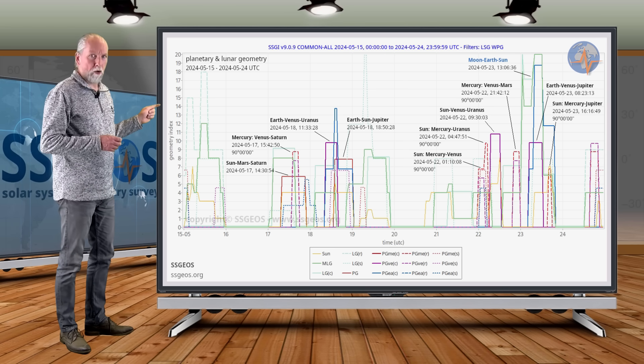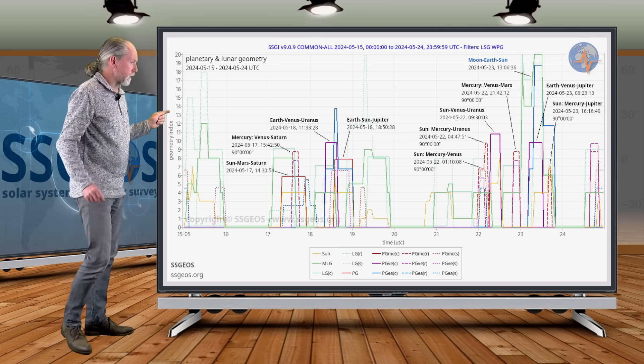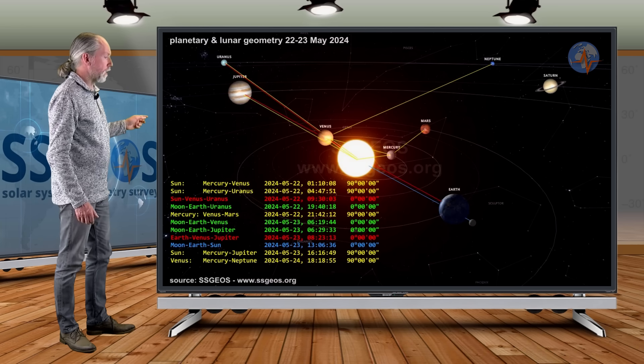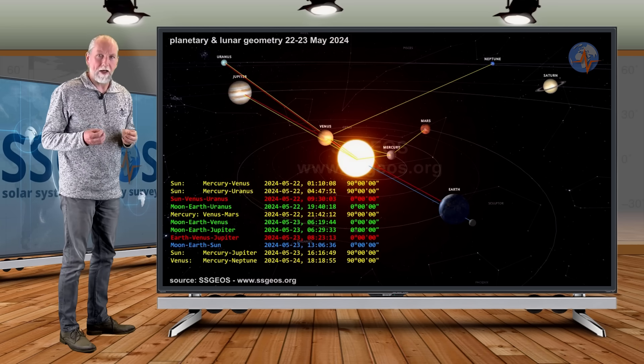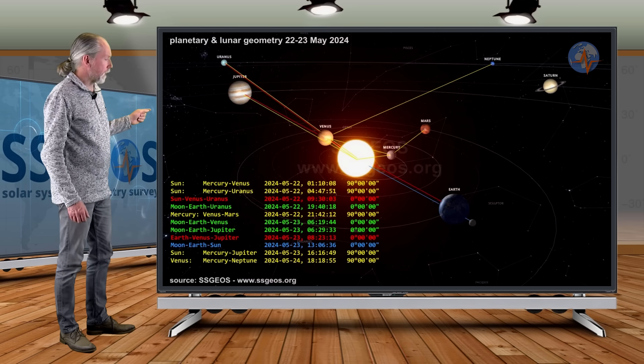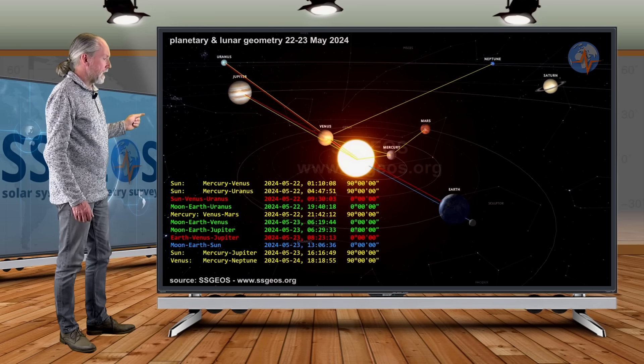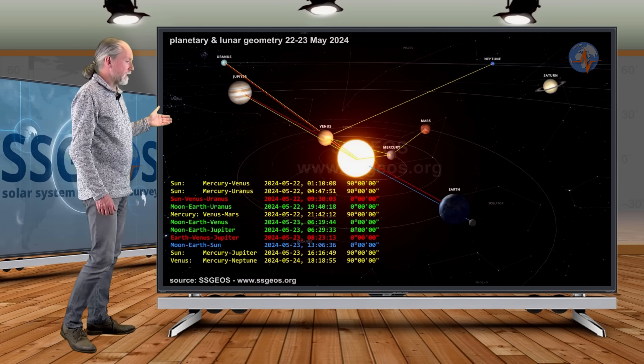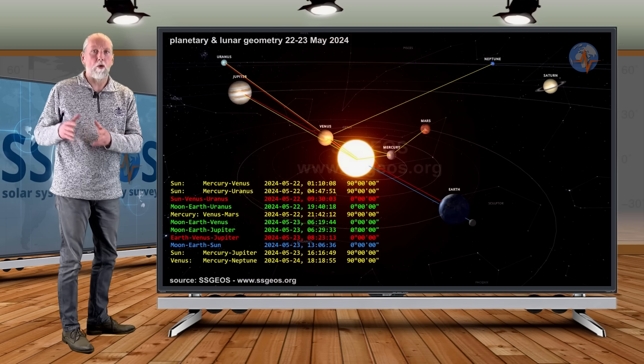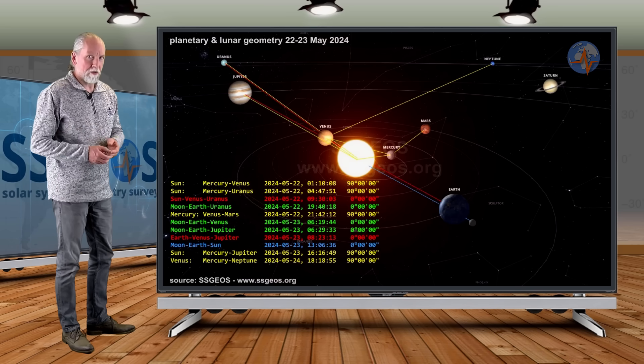So let's have a look at the solar system because this is going to be critical geometry, a really critical convergence. In the solar system here, we see a whole bunch of yellow lines. These are the right angle geometries with the planets. And again, Mercury is involved here a lot. And also Venus, it starts on the 22nd and it goes into the 23rd and even on the 24th. But I will cover the 24th and onward later on in the next update.